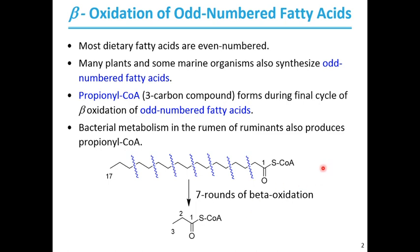Let me take you through an example. This is a long-chain odd-numbered fatty acid. It can enter beta oxidation and go through the normal beta oxidation pathway, similar to a saturated fatty acid — like palmitoyl-CoA, the example we have seen before. This can enter beta oxidation and it can undergo 7 rounds.